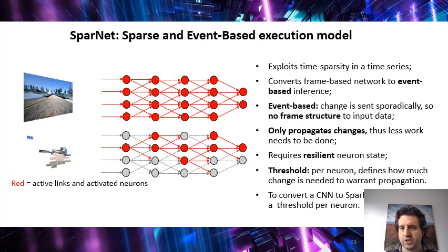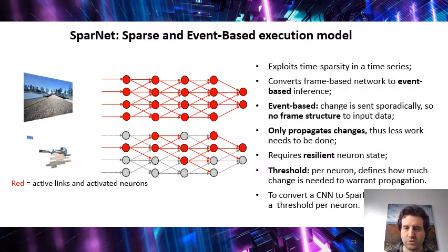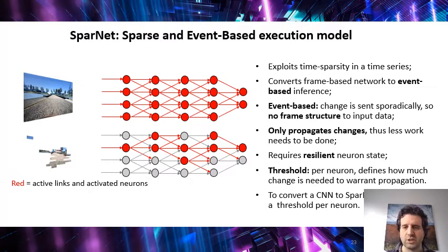The idea is that with this we are going to exploit the time sparsity in a time series. The conversion is mostly automatic. We only propagate the changes, so we have a lot less work to do than with the original image. We require resilient neuron states — that's one of the costs: we have to keep the state of all the neurons in the system such that we don't need to recompute it.